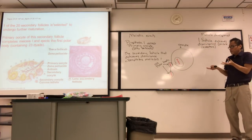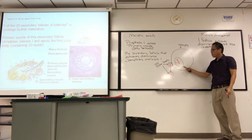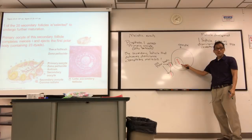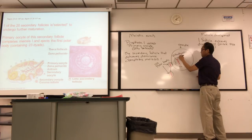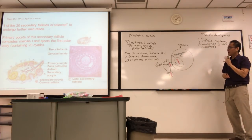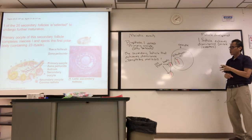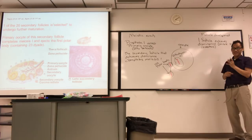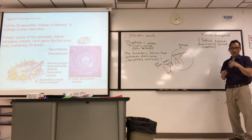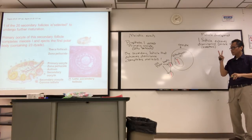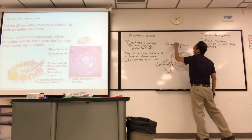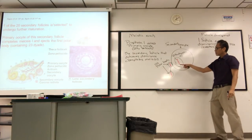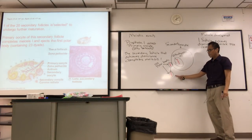Once you complete meiosis I, you start meiosis II. What's inside the cell is 23 dyads — it's NR, haploid and replicated. Once you complete meiosis I, you don't call it a primary oocyte anymore; you call it a secondary oocyte, because it's going to enter meiosis II. Primary oocyte → meiosis I. Secondary oocyte → meiosis II. You get two cells: a secondary oocyte and the first polar body, which is not going to be fertilized.